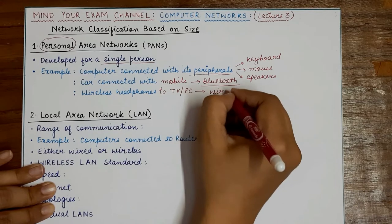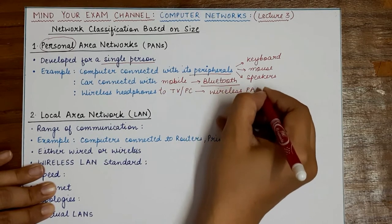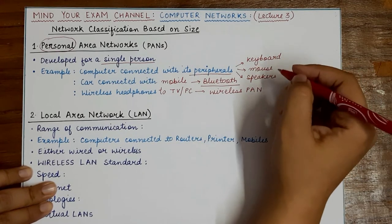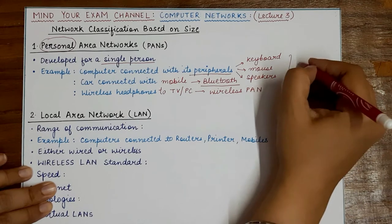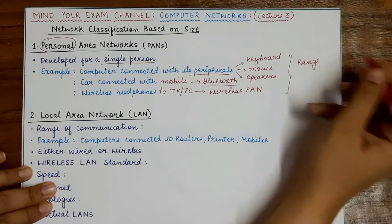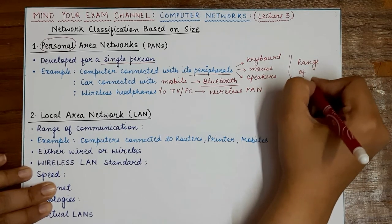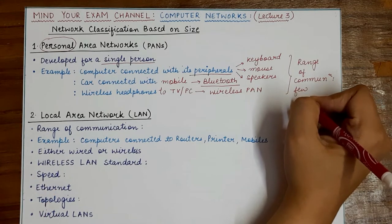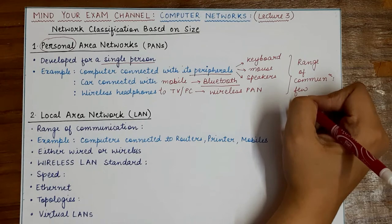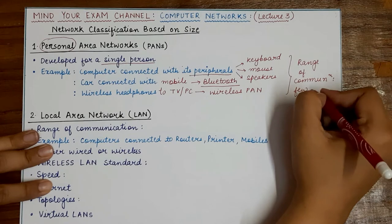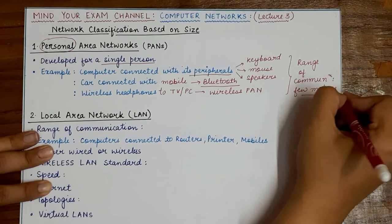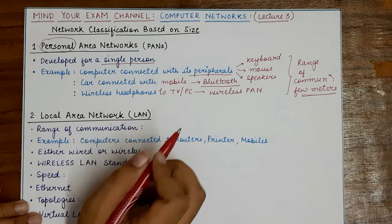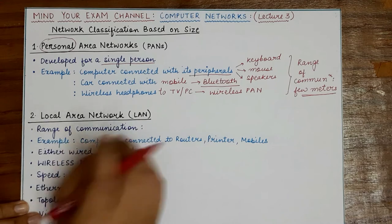Each of the networks we study can be either wired or wireless — that does not matter much. The important categorization and the main difference between these networks is the range of communication, or the area they expand. For a Personal Area Network, the range of communication is only a few meters. For example, pacemakers or hearing aids that communicate with a small user-based remote also have a range of just a few meters.